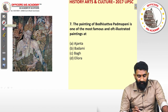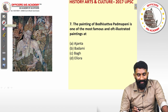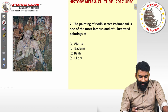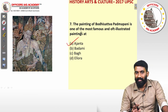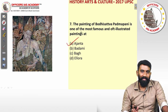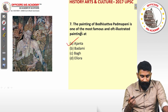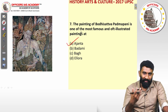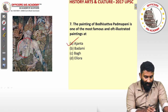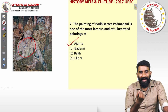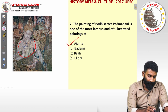Question seven is straightforward: the painting of Bodhisattva Padmapani is one of the most famous paintings — at which place is it located? The answer is A — Ajanta. It is a factual question. You have to know that Padmapani, a Bodhisattva, is painted holding a lotus in his hand — that is why he is called Padmapani.